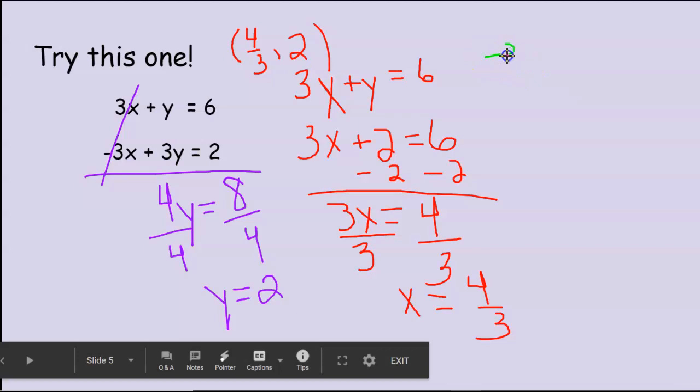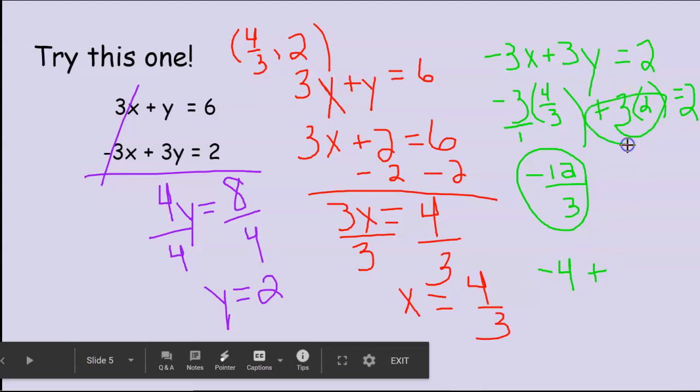I rewrite it. And I substitute my x and y in. I know x is 4 thirds. I know y is 2. This whole thing should give me 2 when I get done. Now, when I multiply negative 3 times 4 thirds, it's really kind of like negative 3 over 1. And I know that that would give me negative 12 over 3. Do you know how to simplify negative 12 over 3? I sure hope so. 3 goes into negative 12 negative 4 times. So that's what I get when I multiply through. Plus 3 times 2. Remember, I'm back here now. 3 times 2 is 6. And I should get 2. Well, let's just check.